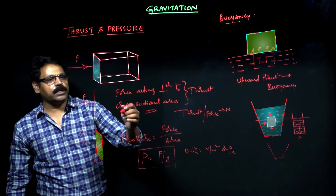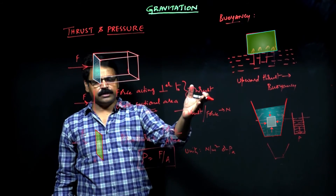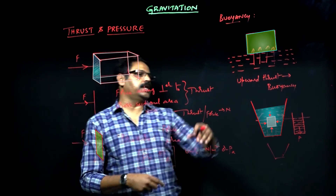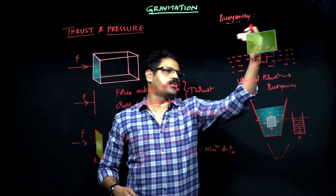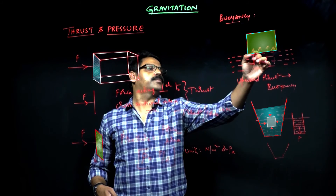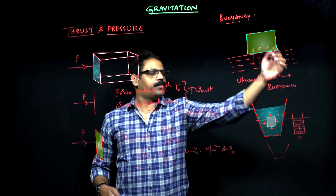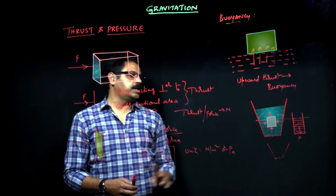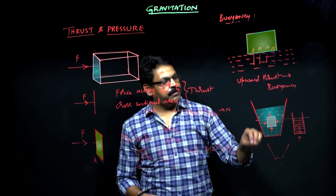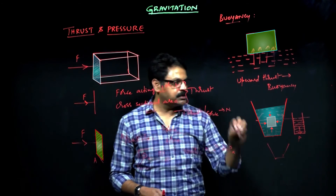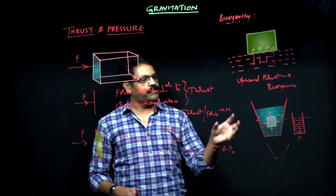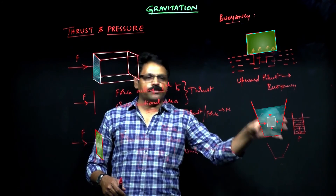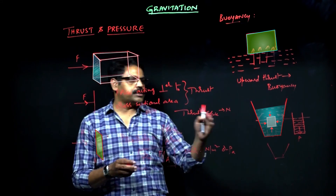Thrust is the force acting perpendicular to the surface. Force acting per unit area is called pressure. If a fluid exerts an upward force on a body, that upward force is the buoyant force — upward thrust is buoyancy. Fluid pressure is the pressure exerted by a fluid on the walls of a container or a body immersed in it, and fluid pressure remains the same in all directions. These are the key definitions before proceeding further.